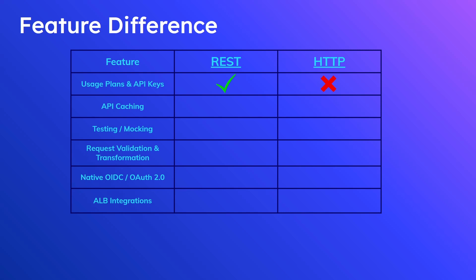Third is testing and mocking — through the console you can invoke test events against your API Gateway endpoint to verify wiring and mock dependencies. That's only offered through REST, not HTTP. Finally, request validation and transformation: validation lets you require specific keys and values in incoming requests, while transformation lets you remap keys to new ones for special use cases. These are also only offered through REST currently.